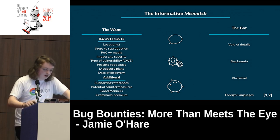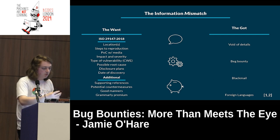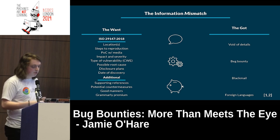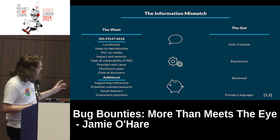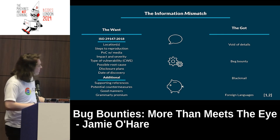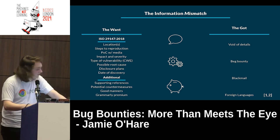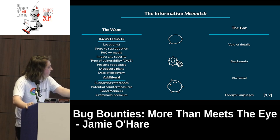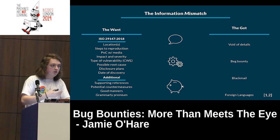This leads on to our first problem: the information mismatch. This term comes from economic theory. It basically boils down to: we know what people want but we don't provide it. If you look at what's wanted, there's a handy ISO updated last year which gives you what you should put in a vulnerability report — location, steps of reproduction, POC, web media, impact and severity, types of vulnerability, root causes, disclosure plans, and data discovery. All this helps the people who receive bug reports resolve them faster.